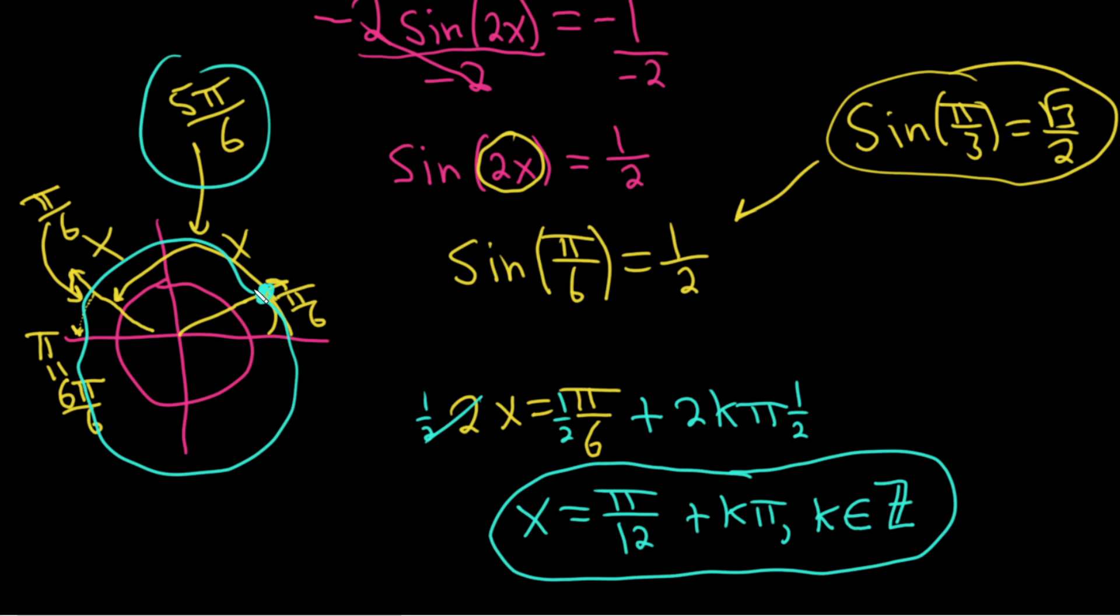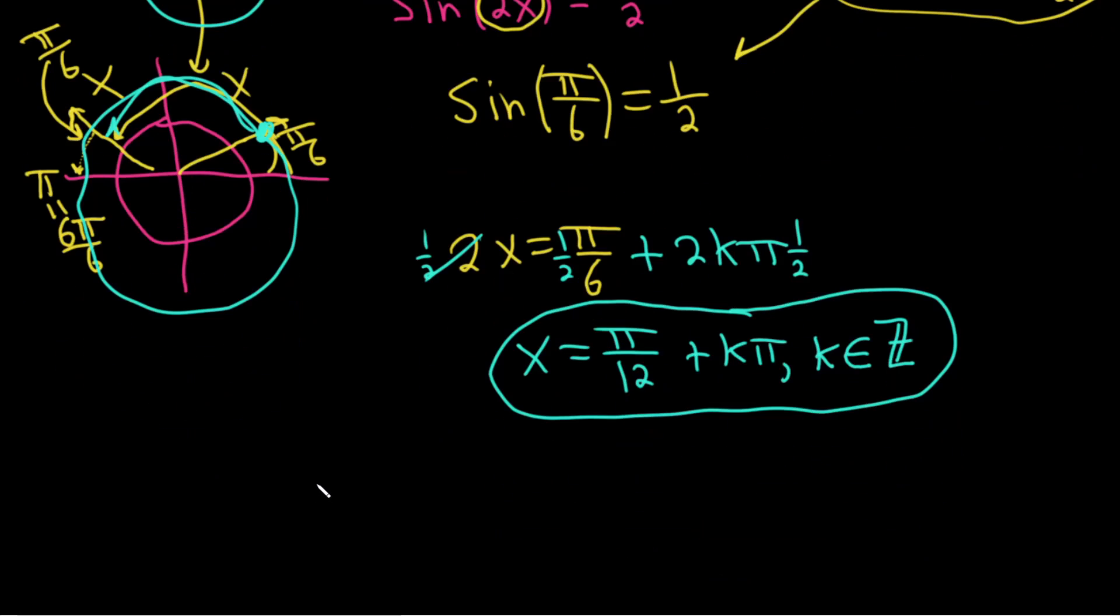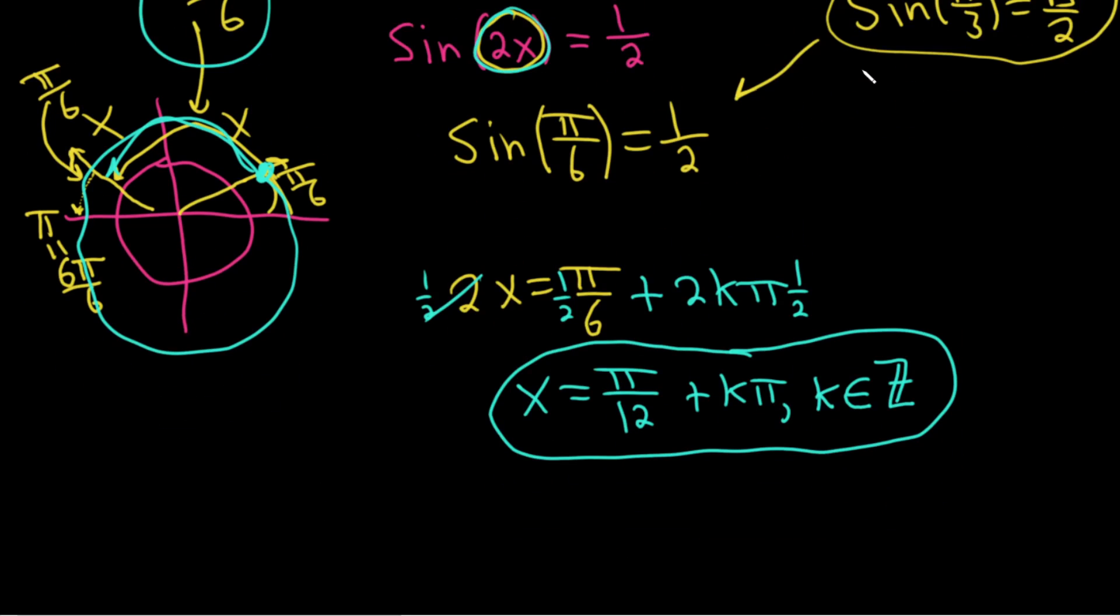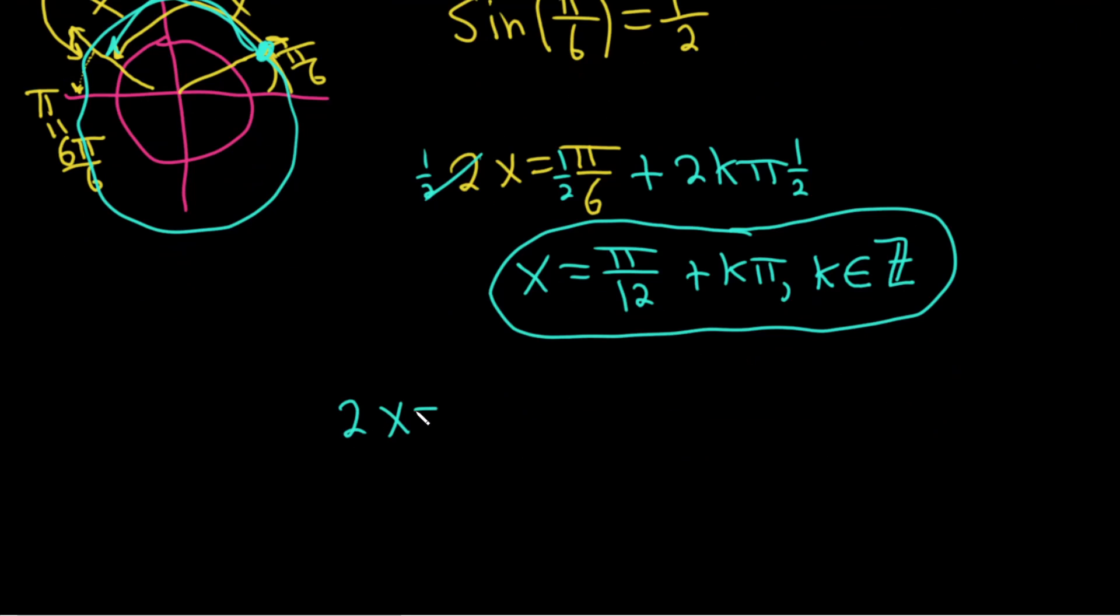The other one is 5π over 6, right? We established that. So then we would just take 2x again, because that's what's here. And we set that equal to 5π over 6. And again, plus 2kπ, because we can add or subtract any multiple of 2π to 5π over 6, and we end up in the exact same place on the unit circle. Again, to solve for x, because we have a fraction on this first term, it might make more sense to multiply by 1 half. So x is equal to 5π over 12 plus kπ. And in all of this, k is an element of the set of integers.